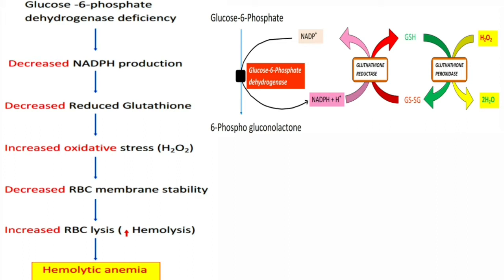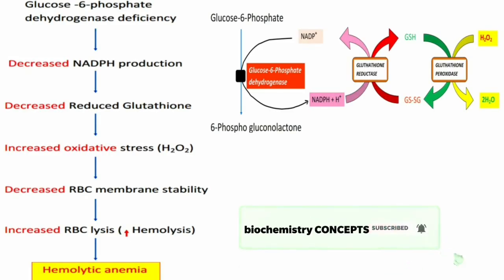Decreased reduced glutathione leads to increased oxidative stress. During normal cellular metabolism, free radicals such as hydrogen peroxide are produced. Normally, reduced glutathione detoxifies hydrogen peroxide, but because of NADPH deficiency, these oxidative agents cannot be detoxified. This leads to accumulation of hydrogen peroxide within the cell. RBCs are particularly affected because they have no other mechanism to produce NADPH.